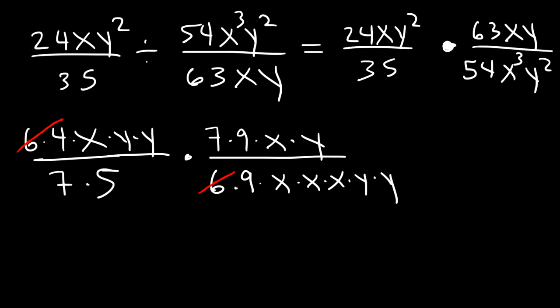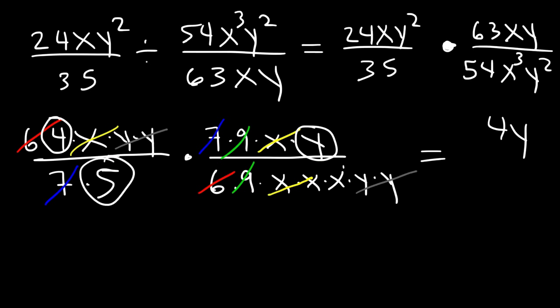Now notice that we can cancel a 6, a 7, and a 9. Next, we can cancel two x variables. And we can cancel two y variables. So on the numerator, we're left with a 4 and a y. So we can write that as 4y. On the bottom, we have a 5 and an x. So we can put 5x. And so that's the answer. 4y divided by 5x.